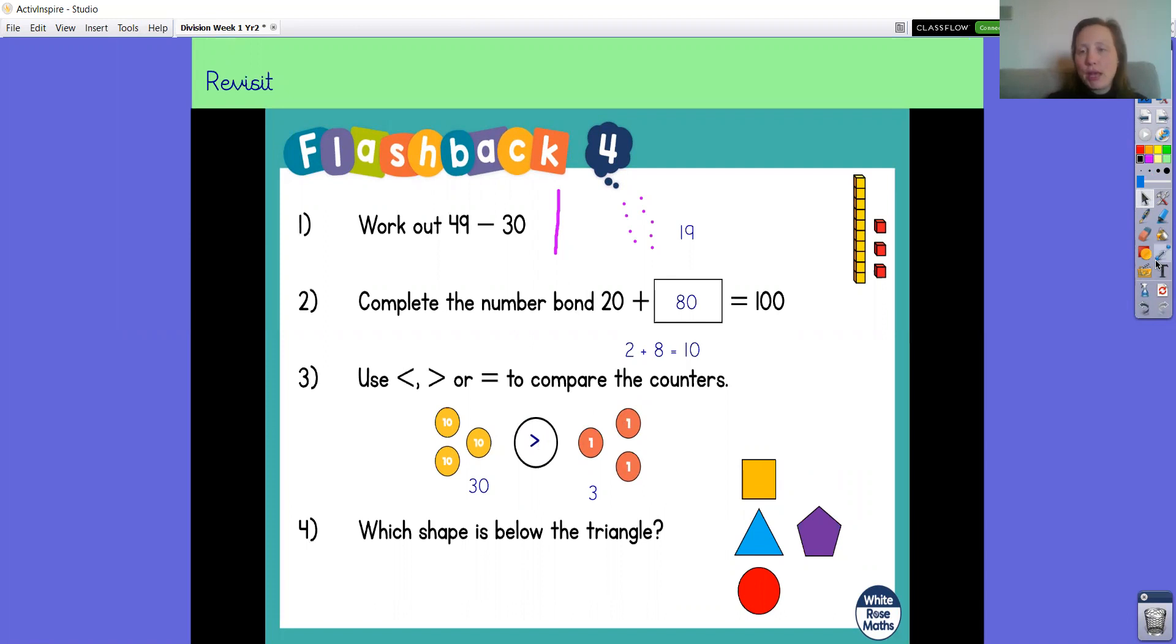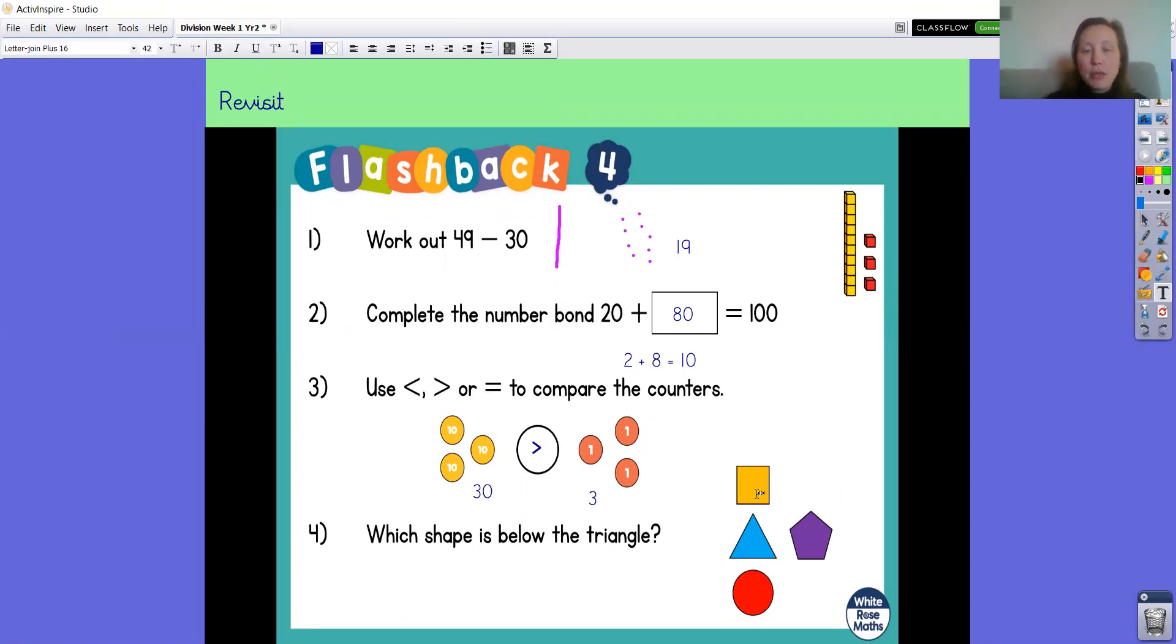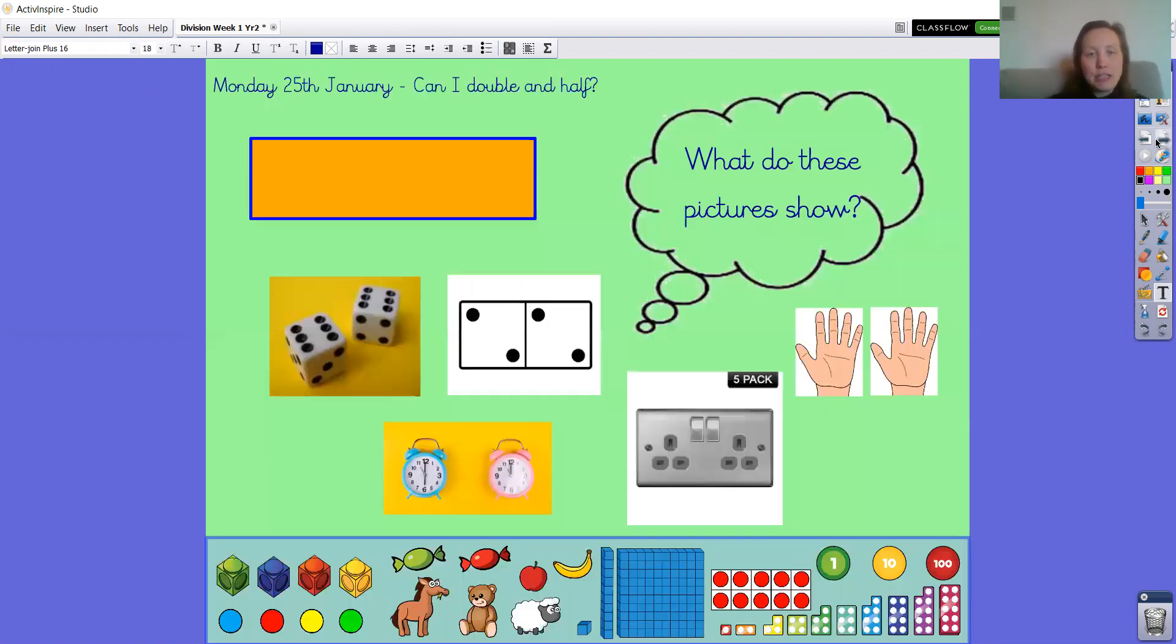Finally, what shape is below the triangle? The square is above the triangle, the pentagon is to the right or next to the triangle, and so we have the circle which is below the triangle. You should have been practicing that on spelling frame.